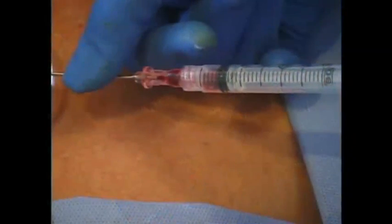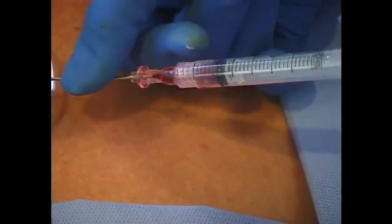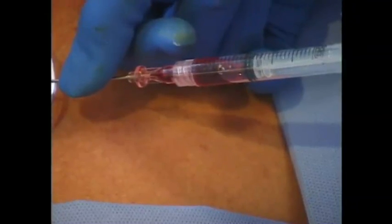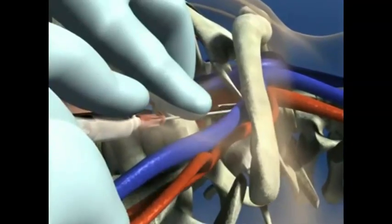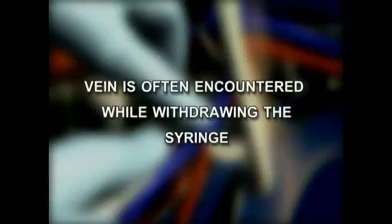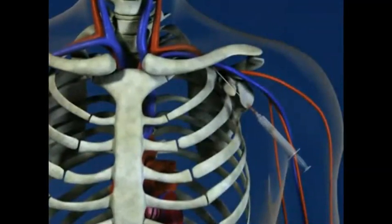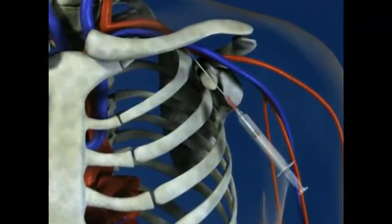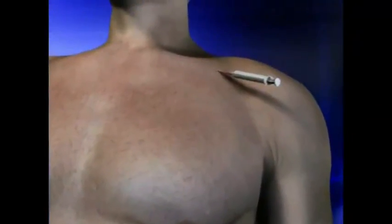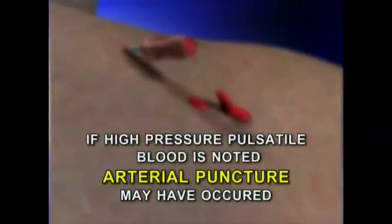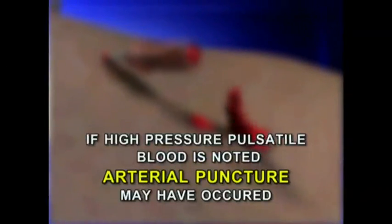While this is being done, constant negative pressure is maintained in the syringe and a flash of blood in the syringe indicates the vein has been entered. If no flash of blood is encountered, the needle is slowly withdrawn, again while maintaining negative pressure in the syringe, as the vein is often encountered while withdrawing. If this is unsuccessful, repeated passes are attempted with slight changes in the orientation of the needle to find the vein. After accessing the vein, the syringe is removed and the backflow of blood is observed. If high-pressure pulsatile blood is noted, arterial puncture may have occurred.